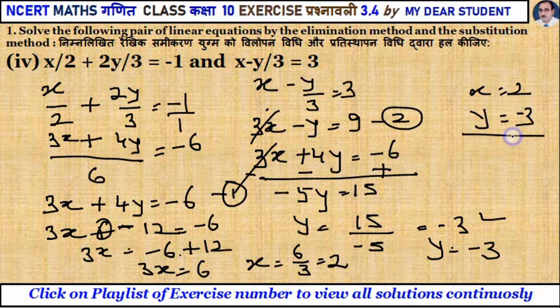This is your answer. The answer is x is equal to 2, and y is equal to minus 3. Therefore, the solution of the linear equation by elimination method is x equals 2 and y equals minus 3.